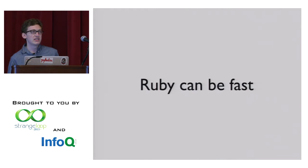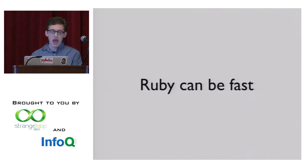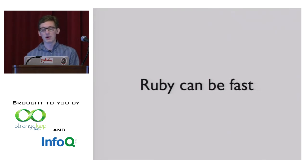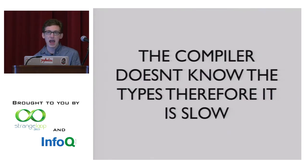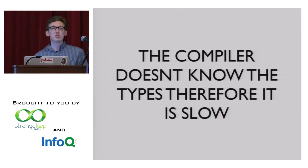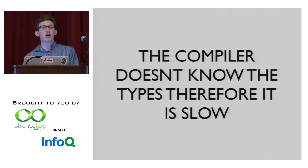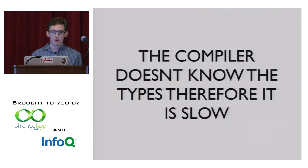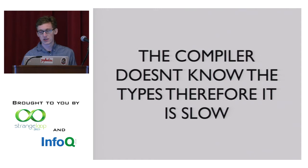So Ruby can be fast. It is not necessarily slow. What are the myths about why we think it's slow? The answer I get from almost 100% of people is: the compiler doesn't know the type, so it's slow. You don't put types in your program, you don't infer them, it's not a type inference language, so the compiler can't optimize. But what does that actually mean? What are the actual performance consequences of not knowing the types?